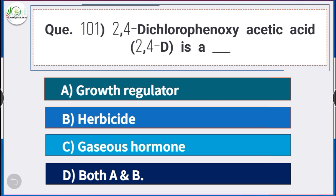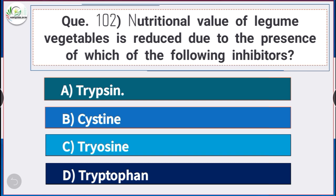Question number 102: Nutritional value of legume vegetables is reduced due to the presence of which inhibitor? Answer is option E — trypsin. Nutritional value of legume vegetables is reduced due to the presence of trypsin inhibitor.